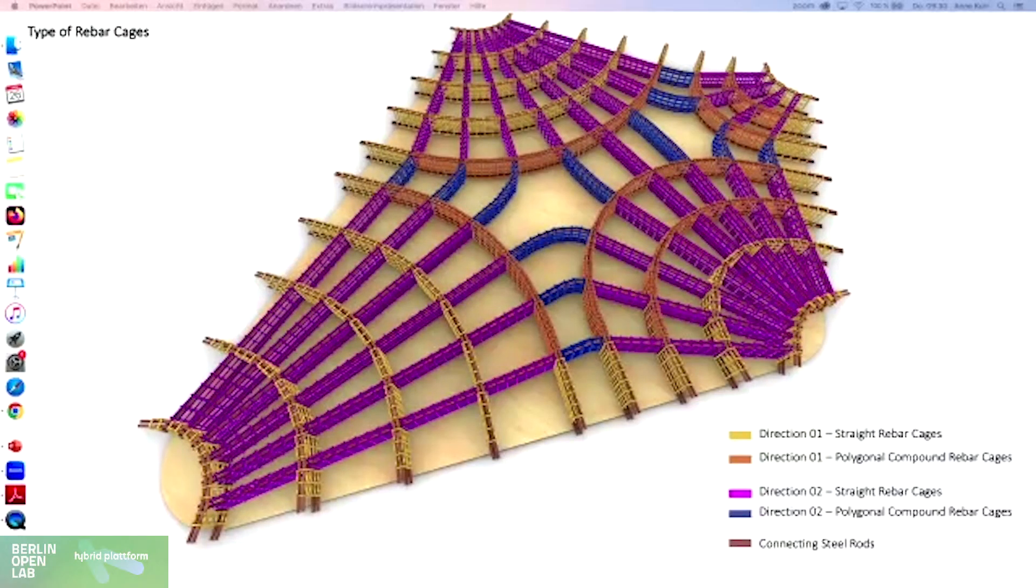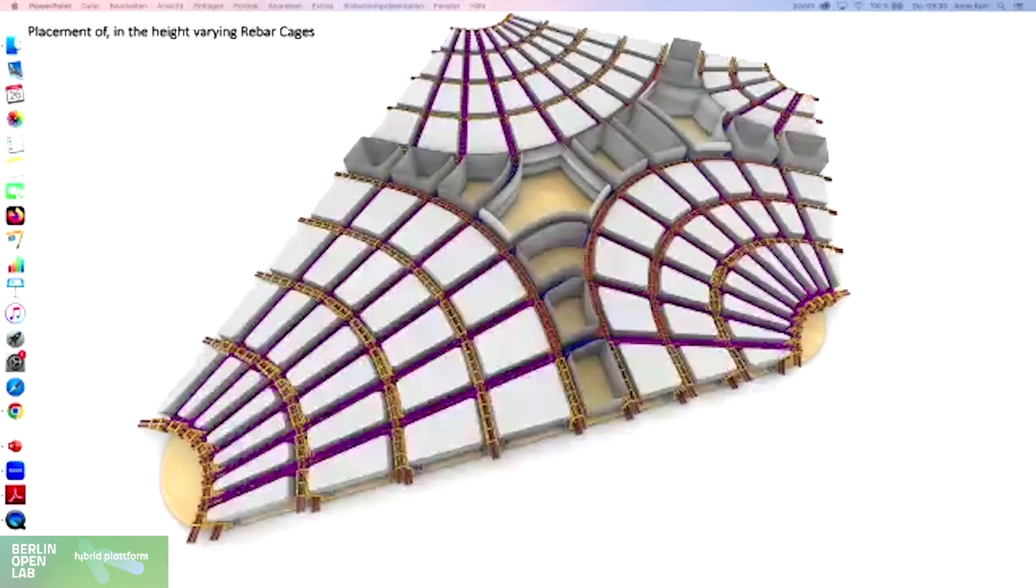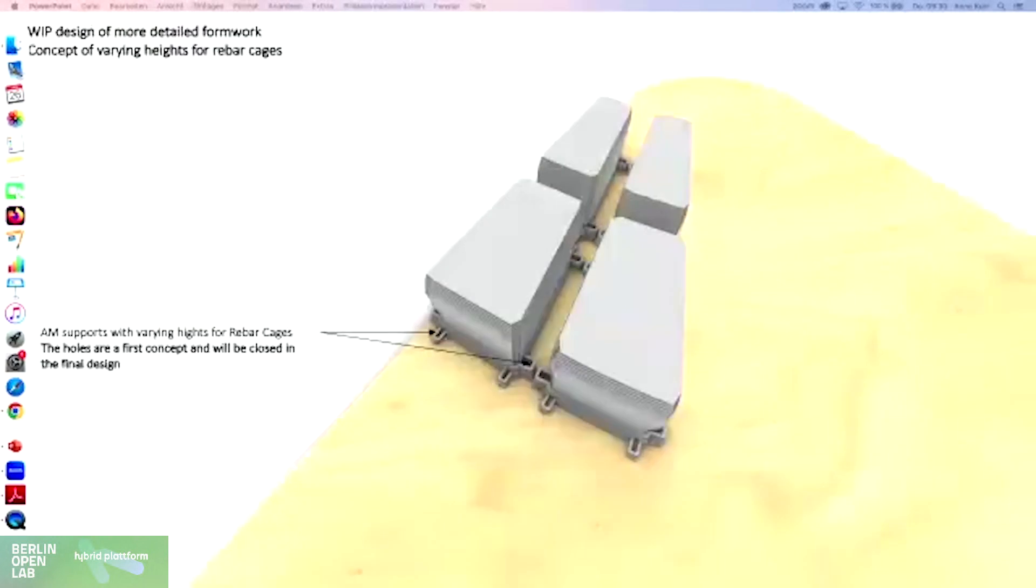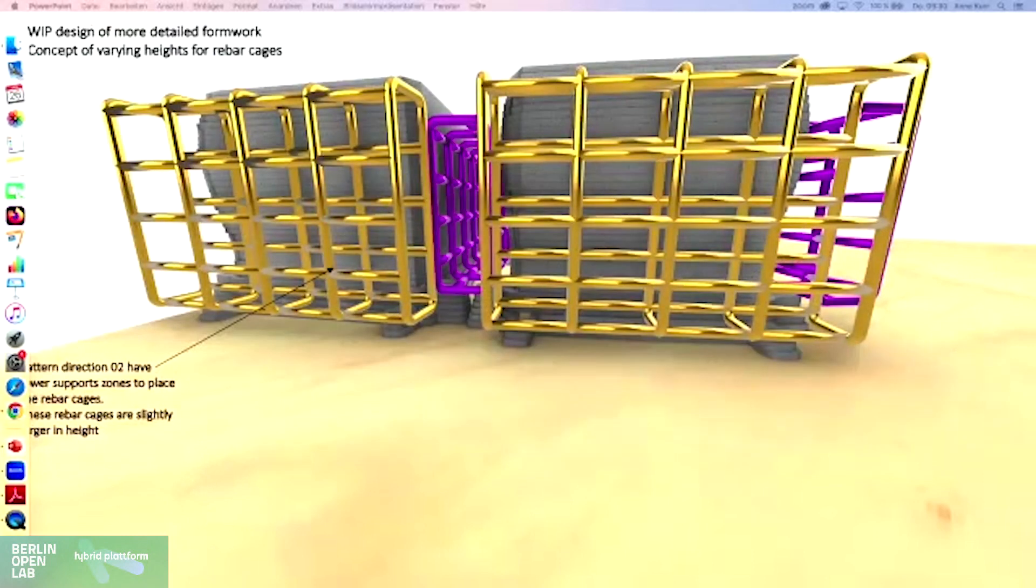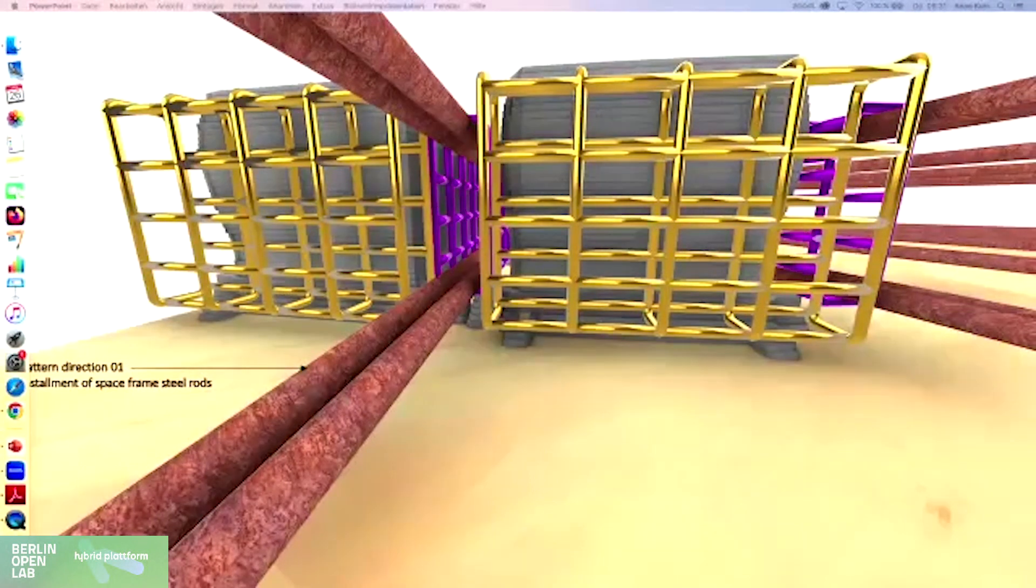One of the challenges here is from research to a practical building there are great challenges we need to face. One is actually the planning of the reinforcement because it's not as streamlined as a normal rationalized grid. We had to do a geometric trick where we have support areas that host two different types of reinforcement cages with different heights. This might look confusing, but reinforcement has steel rods that connect the whole slab as a spatial steel frame.